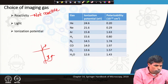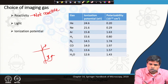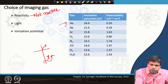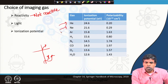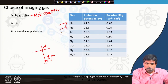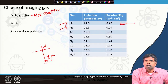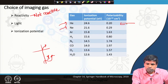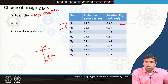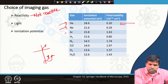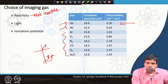Third, the ionization potential is important. Helium and neon are mostly used — helium for microscopy purposes and neon and other gases for fabrication-type studies. They have much higher ionization potential compared to other gases.